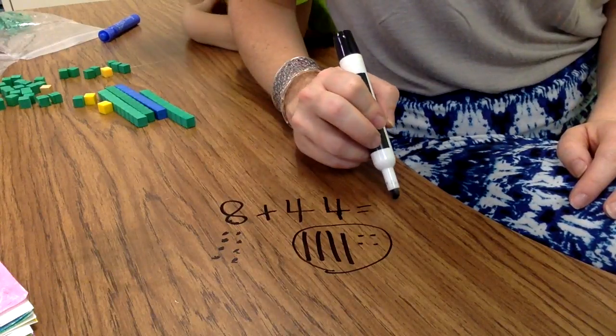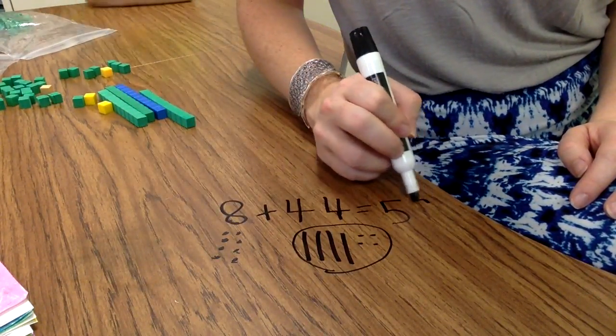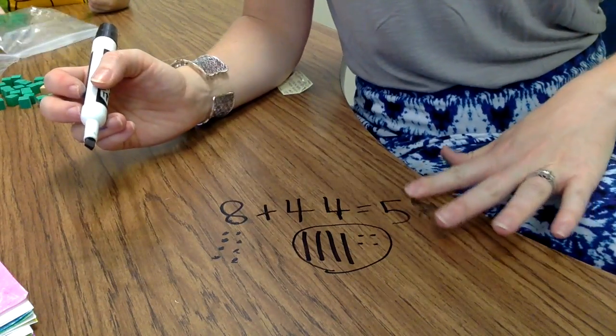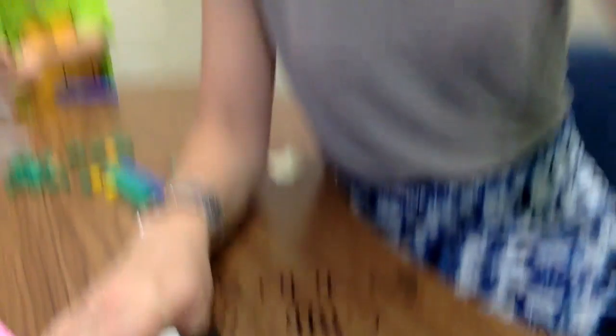So pictorially, I've discovered that 8 plus 44 has a sum of 52.